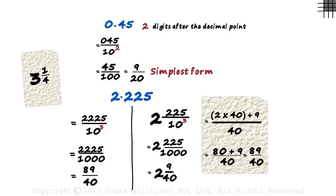While converting it into a mixed fraction, just remember that the number to the left of the decimal will be the whole part and the number to the right of the decimal will be the numerator of the fractional part. The denominator in both the cases is the same: 10 raised to the number of digits after the decimal place.